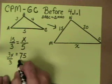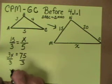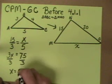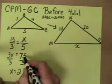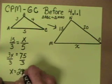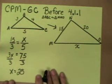Divide both sides by 3 and X will equal 25. So X equals 25.